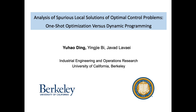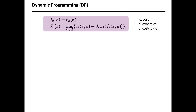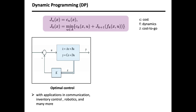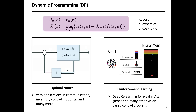Hello, everyone. Welcome to our presentation on the analysis of various local solutions of optimal control problems: one-shot optimization versus dynamic programming. Dynamic programming is a widely-used mathematical technique with applications in communication, inventory control, robotics, and more. Many recent successes in reinforcement learning, such as deep Q-learning, are also rooted in DP. Although DP has a rich theoretical foundation and broad applications, exact solutions of DP are often impossible to obtain in practice, suffering not only from the curse of dimensionality but also because solving DP requires solving optimization subproblems to global optimality, which is NP-hard in general.